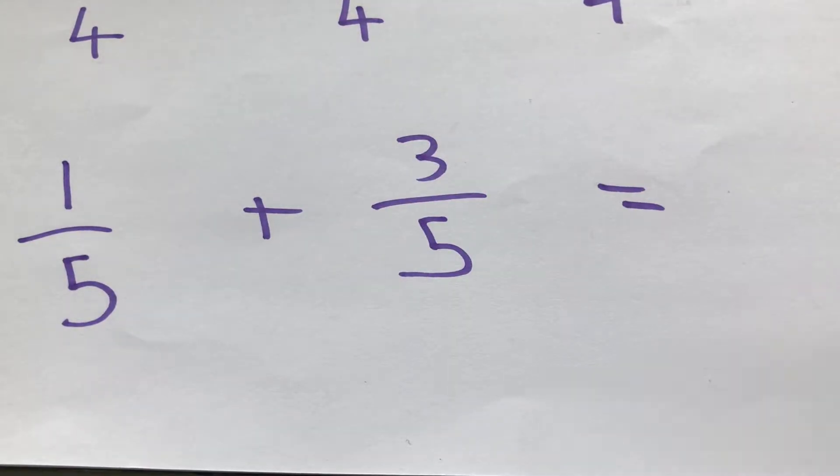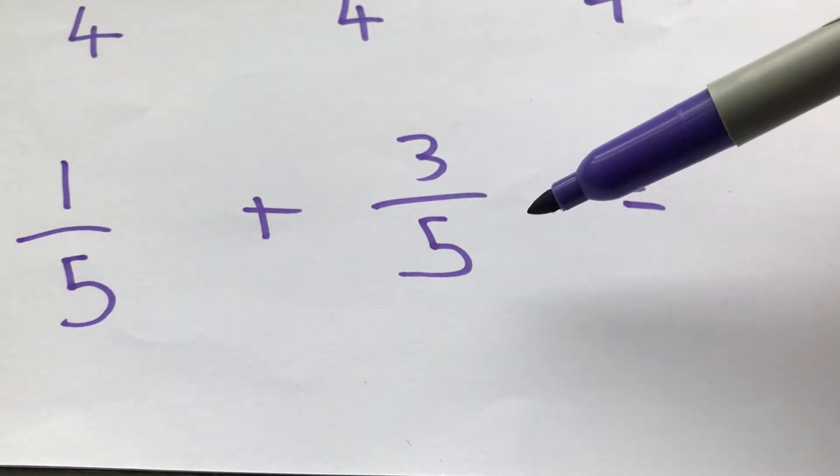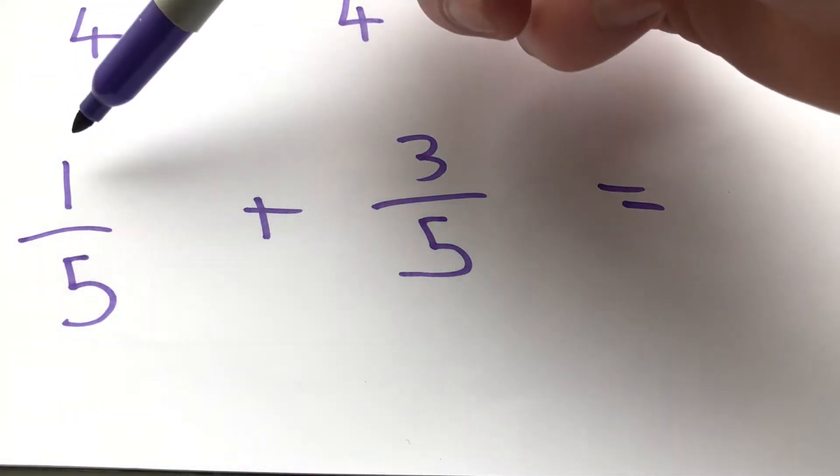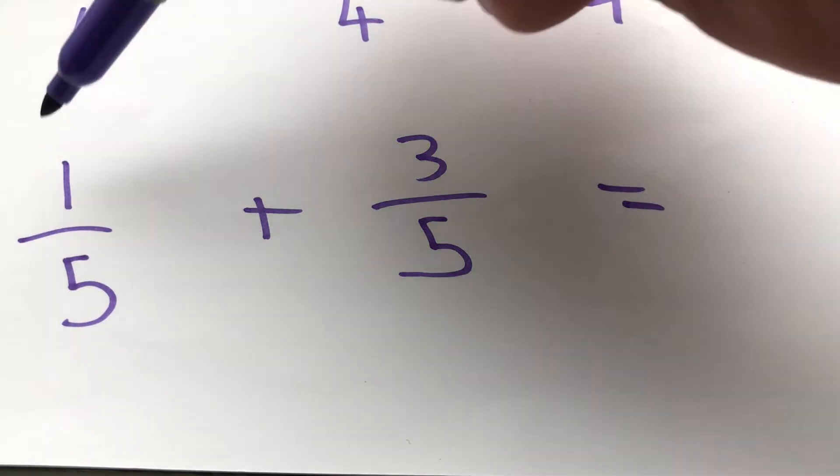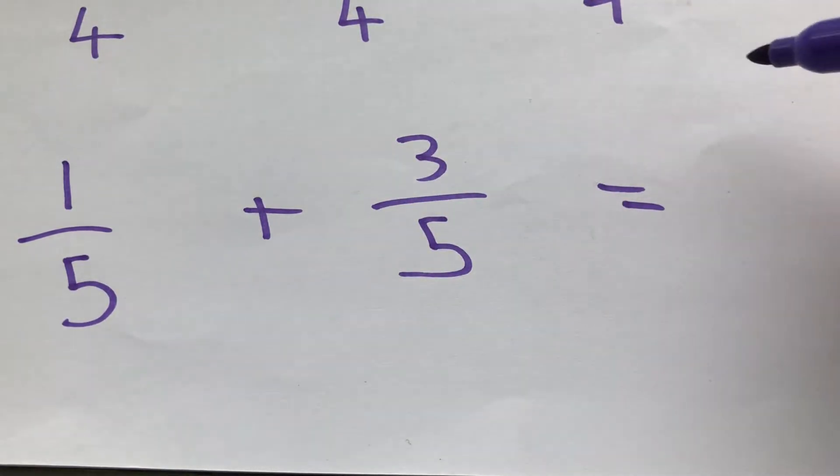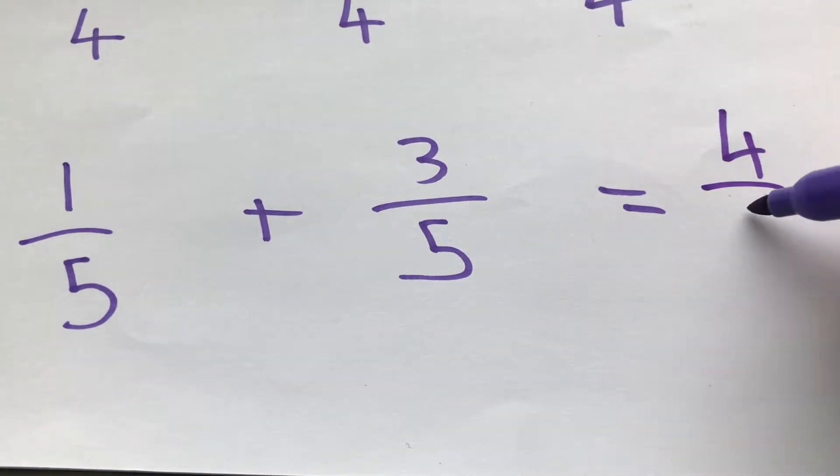So for my second example, we have the same denominator here again, the fifths, and we have one fifth plus three fifths. So all we need to do is add these two together, so it's four fifths.